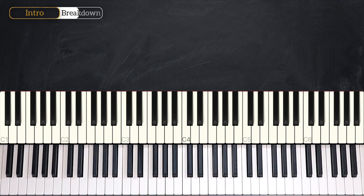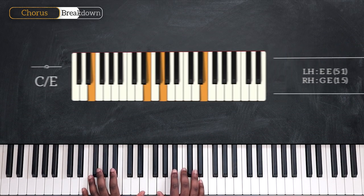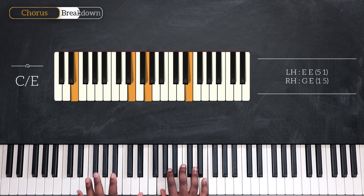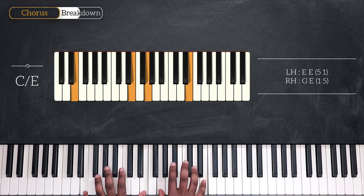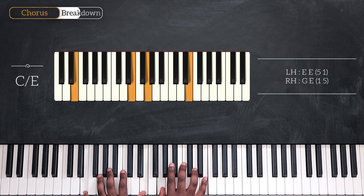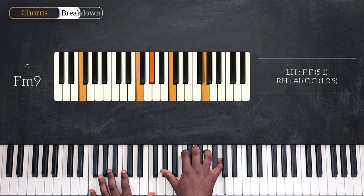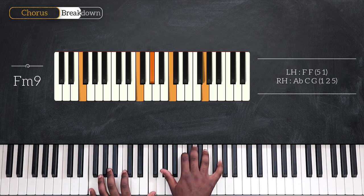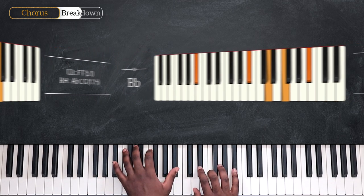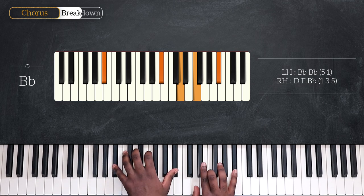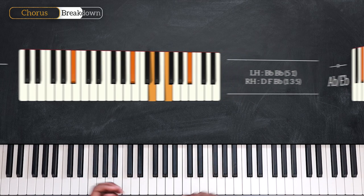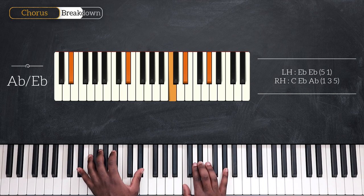Next up, we have the pattern of the chorus. We're going to start with C over E. Octave E, G and E. Then we're going up to F minor 9. Octave F, A flat, C and G. Going up again on B flat. Octave B flat, D, F and B flat. Down to A flat over E flat. Octave E flat, and for the right I'm playing C, E flat and A flat.